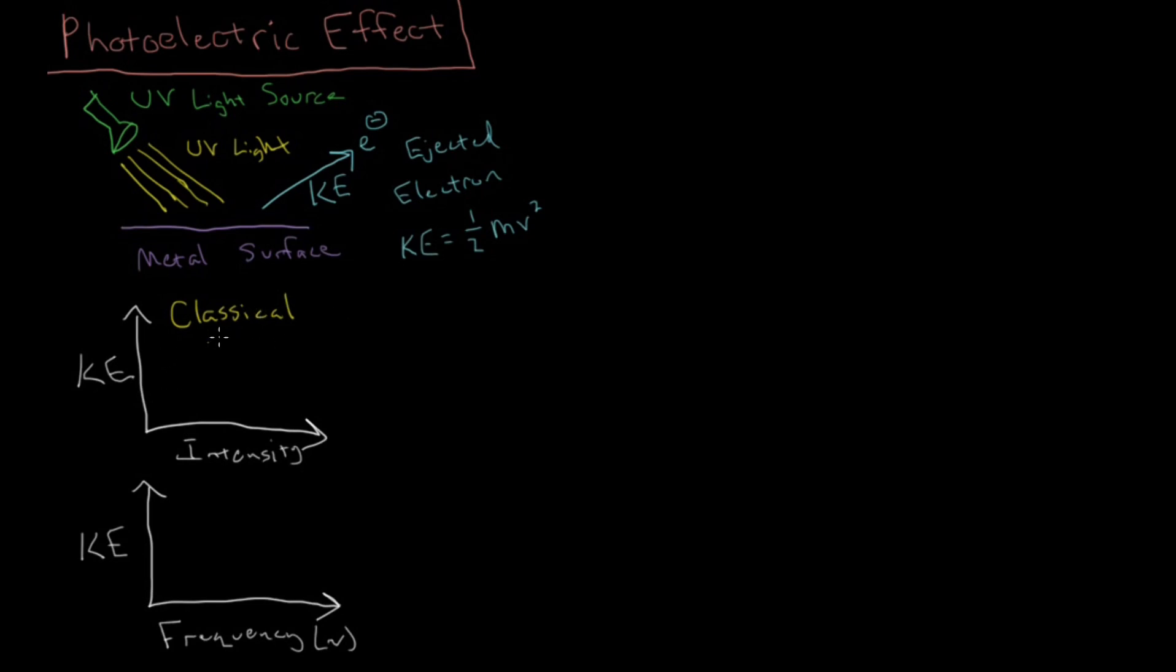So in classical theory, you'd predict that the kinetic energy would increase as the intensity of the light increases. Intensity is just the brightness of the light. So as if you could imagine a flashlight getting brighter and brighter, even though this is UV and we wouldn't be able to see a UV flashlight, but let's pretend we can see UV. As it gets brighter and brighter, we would predict that the kinetic energy of the electrons gets higher. So the electrons are going faster and faster as they get ejected from the surface from brighter and brighter light.